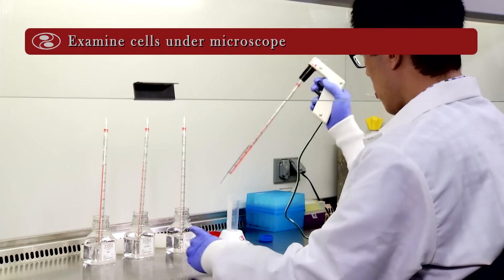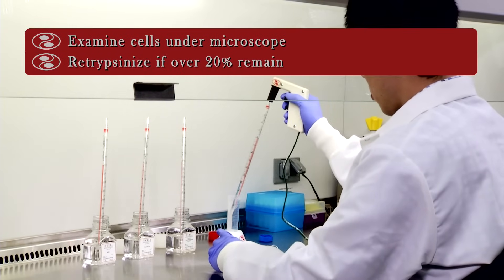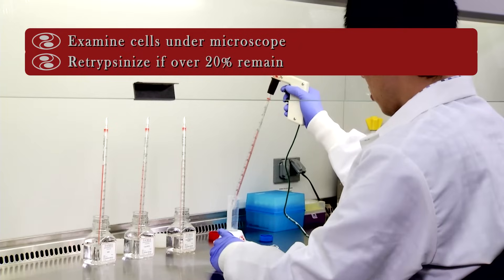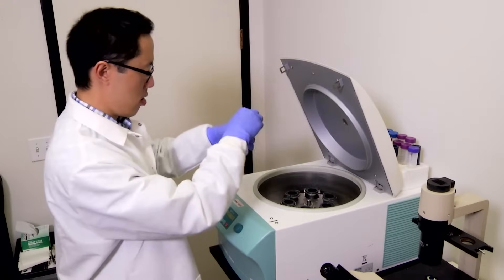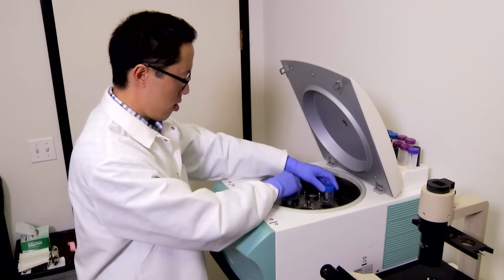Examine cells under microscope. Retrypsinize if over 20% remain. Pellet cells at 220 times G for 5 minutes.